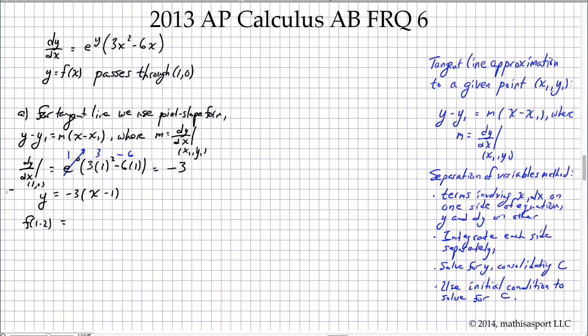So f(1.2) is going to equal -3(1.2 - 1). 1.2 minus 1 is just 0.2, and so -3 times 0.2 is -0.6.